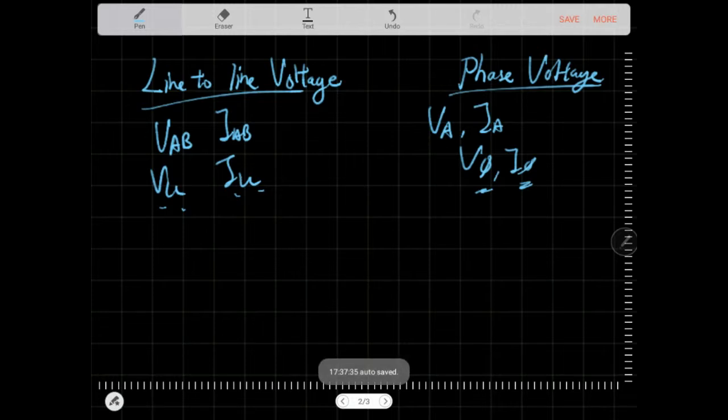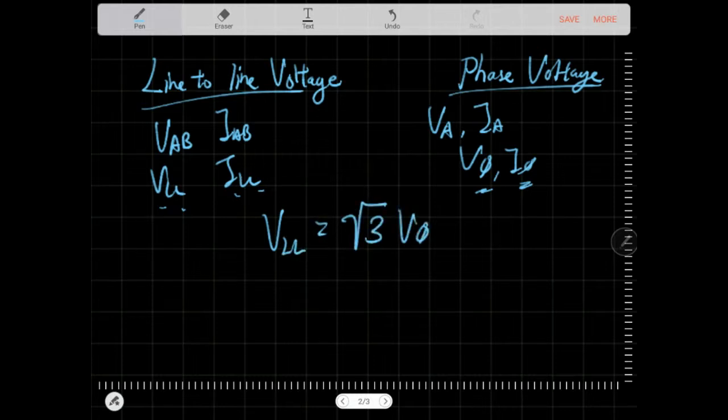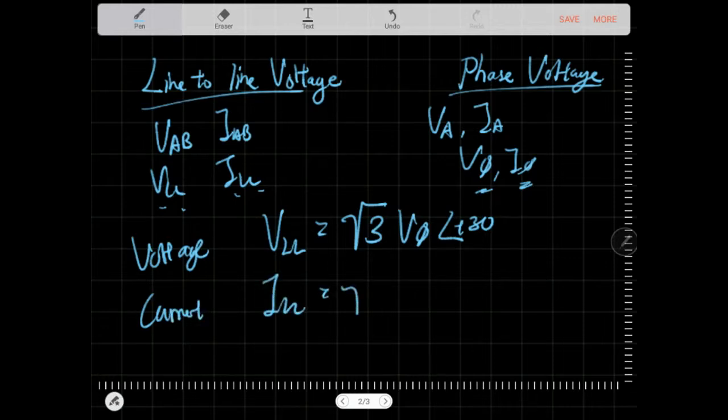And we look at it. The regular formula is just V line-to-line equals root 3 V phase plus 30 degrees. That is the voltage formula. And for the current formula, it's just I line-to-line equals root 3 I phase negative 30 degrees. We see this a lot, but where does this come from? And it doesn't always apply correctly.